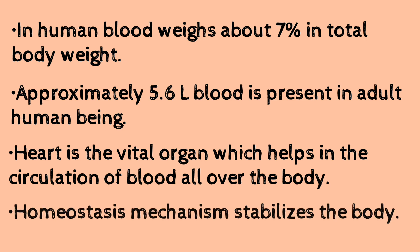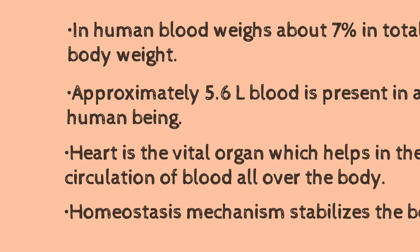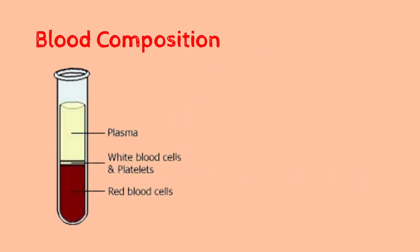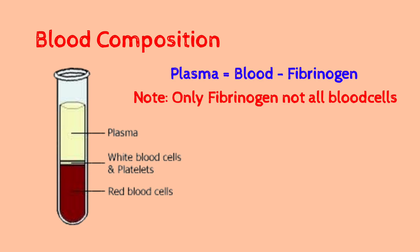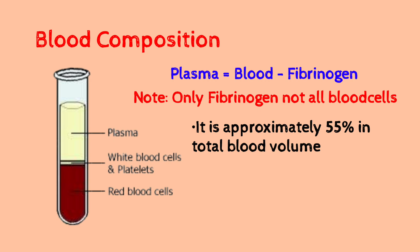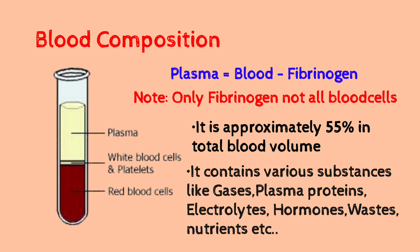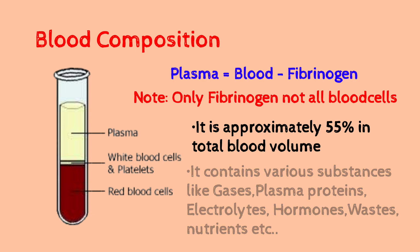There are two components in the blood. First is plasma. If you separate the blood cells — RBC, WBC, and platelets — from blood, what remains is plasma. Plasma is approximately 55% of total blood volume. Plasma contains different gases, plasma proteins, inorganic salts, and hormones.